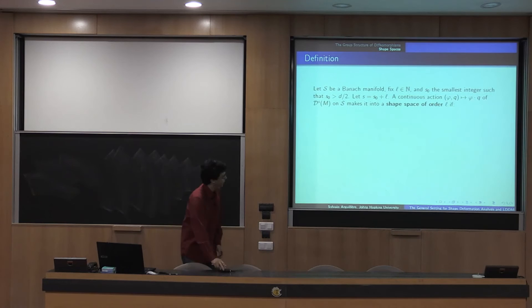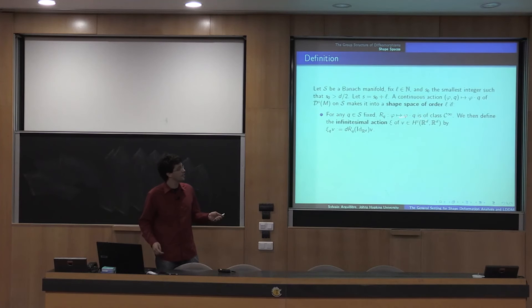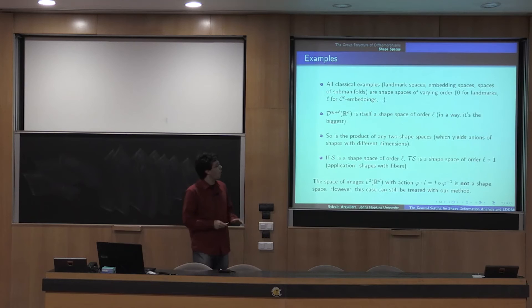So, okay, now, it's almost done. Okay, so a shape space, I'm just gonna, so all I need is an action of the group of diffeomorphism on the space. So a shape space is a Banach manifold, on which the group of diffeomorphisms acts continuously, such that, first of all, the action is smooth on the left, which allows us to define an infinitesimal action of each field. And second of all, the smoother we take the diffeomorphism, the smoother the action becomes, right? So, of course, all classical examples are shape spaces, and moreover, the group of diffeomorphism itself is a shape space. The product of any two shape space is a shape space, and the tangent bundle of any shape space is also a shape space. So this gives us a lot of extra things to study.